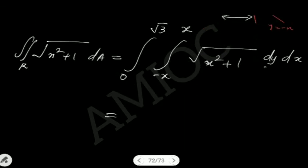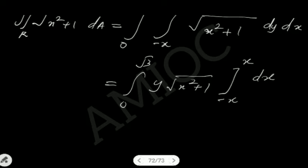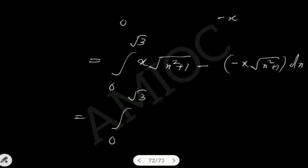Since root of x squared plus 1 is constant with respect to y, the inner integral gives y times root of x squared plus 1, evaluated from y equals minus x to y equals x. This gives x times root of x squared plus 1 minus (minus x) times root of x squared plus 1, which equals 2x times root of x squared plus 1.